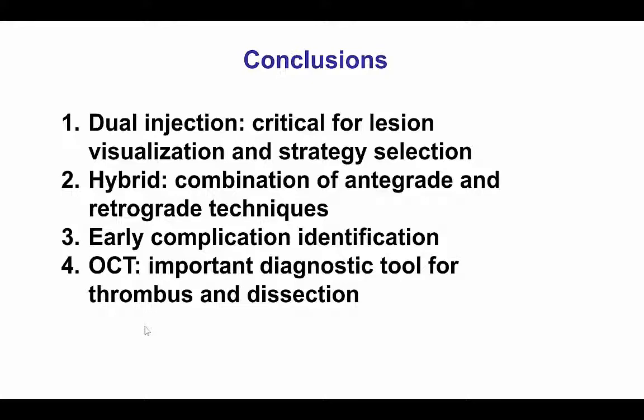The second lesson is that we often need to combine antegrade and retrograde techniques in the same case — this is the whole premise of the hybrid algorithm: use the techniques that work to get the vessel open. In this particular case, to recanalize the first CTO, we had to go antegrade and then retrograde from the obtuse marginal branch.